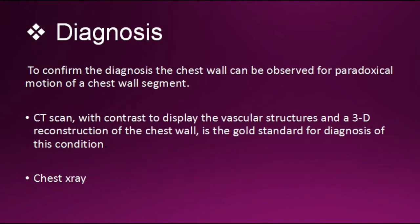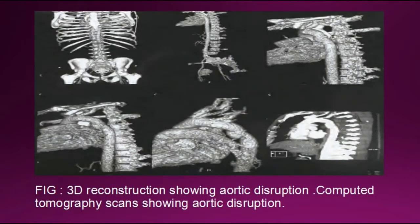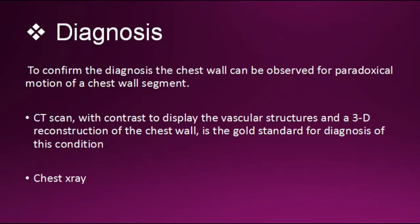Diagnosis: to confirm the diagnosis, the chest wall can be observed for paradoxical motion. Paradoxical respiration is painful and increases the work involved in breathing. CT scan with contrast to display the vascular structure and a 3D reconstruction of the chest wall is the gold standard. You can see a figure here showing a 3D reconstruction demonstrating aortic disruption. Chest X-ray should also be done.